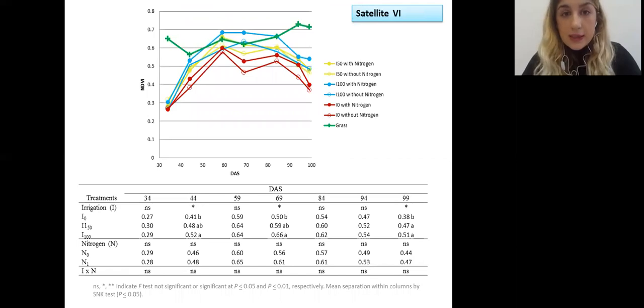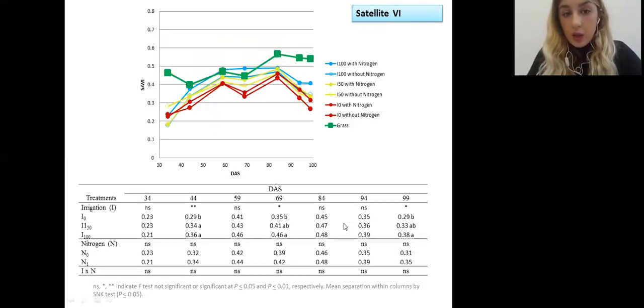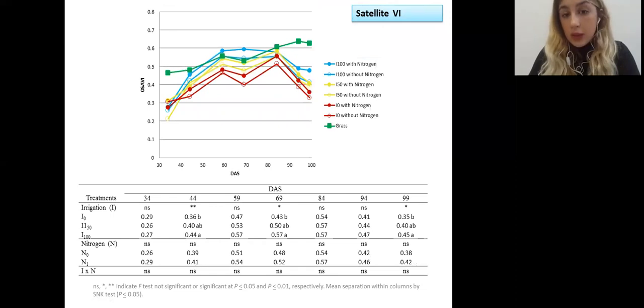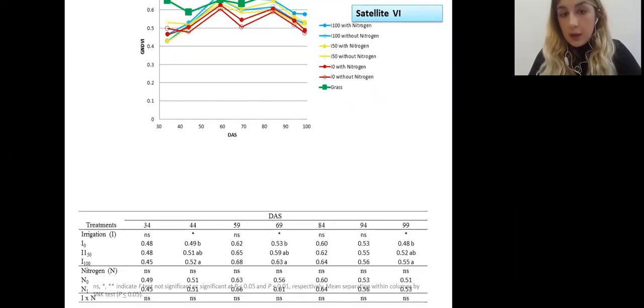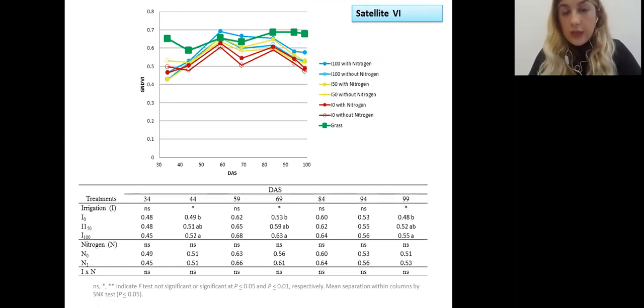For satellite vegetation indices here are presented and also the grass that was taken values of the grass next to experimental field. Here you can see that we found significant difference for all of them just for irrigation while for nitrogen we didn't found. But what is interesting here that we understood that satellite was able to detect change in water regimes because before this day when we have measurement and when we took photo of the sentinel we had irrigation event so we understood that satellite was able to detect day after that to detect change that happened in water regime in the plants. It was the same story for all of these indices.